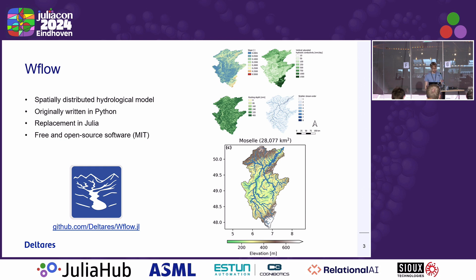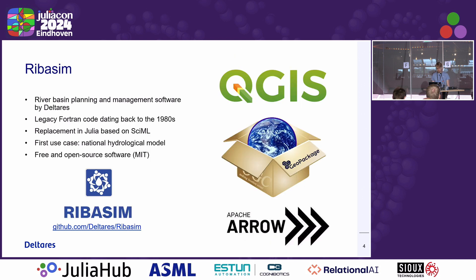W Flow was our first model — we develop more than two models at Deltares for different purposes, but W Flow was the first one to be rewritten from a different language to Julia, and overall that's been a big success. It originally was in Python, but it wasn't quite fast enough. Ribasim is what I'm working on right now.